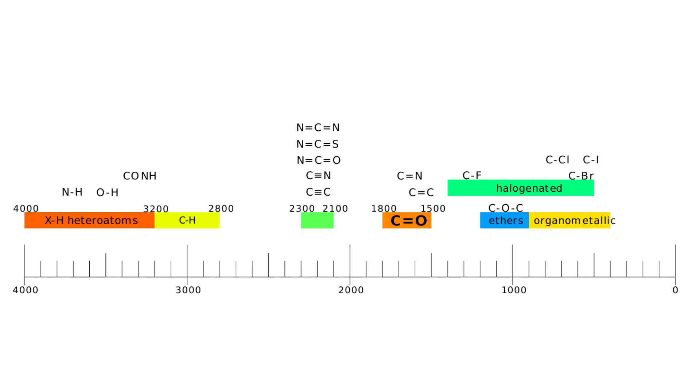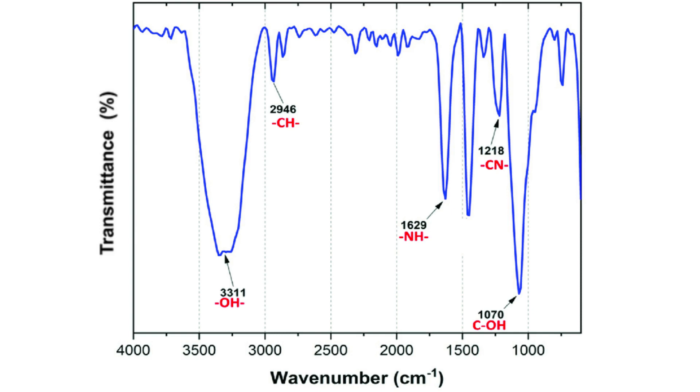Different functional groups absorb light at different wavenumbers and these we already know. Therefore we can use this information to determine the presence as well as the concentration of these different functional groups.